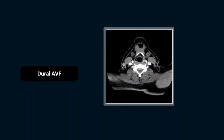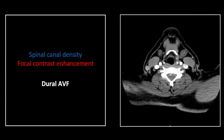Our next case is a dural arteriovenous fistula. This is also traumatic. You can see anteriorly there is increased density within the spinal canal. In addition, there is a small focus of increased density consistent with contrast, and you will see small veins both entering and exiting that region, consistent with an arteriovenous fistula.